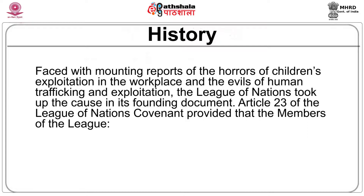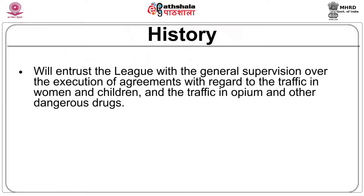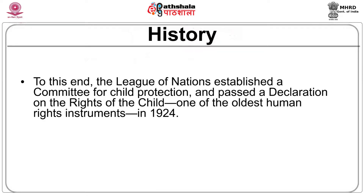Article 23 of the League of Nations provided that the members of the League will endeavour to secure and maintain fair and humane conditions of labour for men, women and children, both in their own countries and in all the countries to which their commercial and industrial relations extend, and for that purpose will establish and maintain the necessary international organizations. It will also entrust the League with the general supervision over the execution of agreements in regard to the traffic in women and children and the traffic in opium and other dangerous drugs. To this end, the League of Nations established a committee for child protection and passed a declaration on the rights of the child.